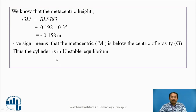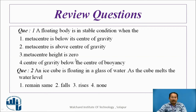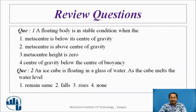There are three conditions: stable, unstable, and neutral. Here are some review questions. A floating body is in stable condition when: the metacenter is below its center of gravity; the metacenter is above the center of gravity; the metacentric height is zero; or the center of gravity is below the center of buoyancy. You must know what is the center of buoyancy, what is the metacenter, what is the metacentric height, and what are the different stability conditions.